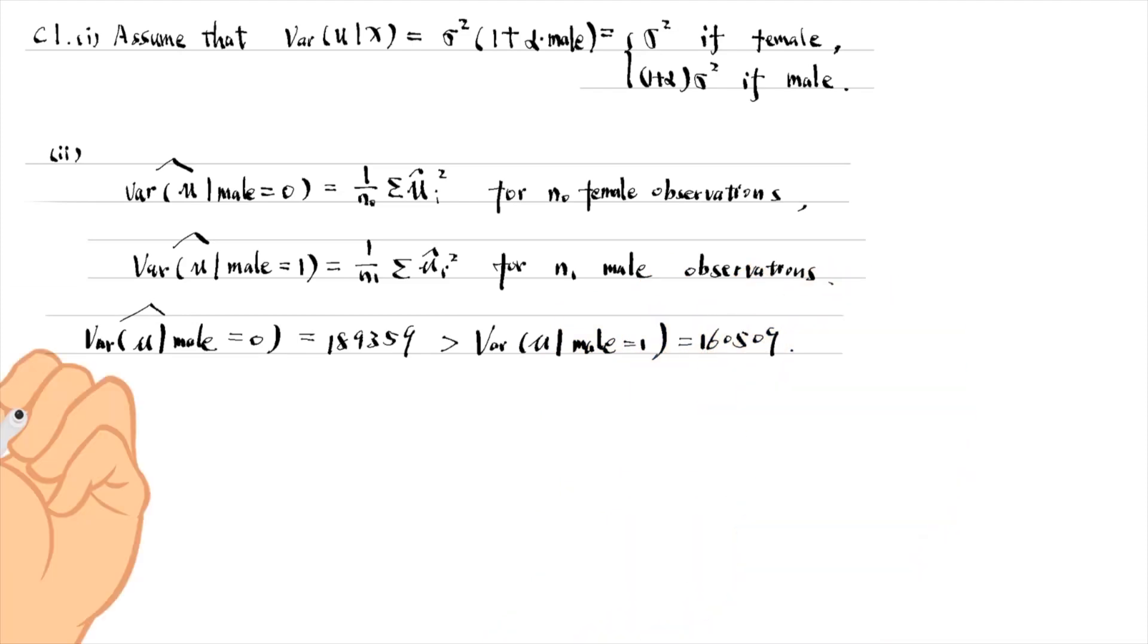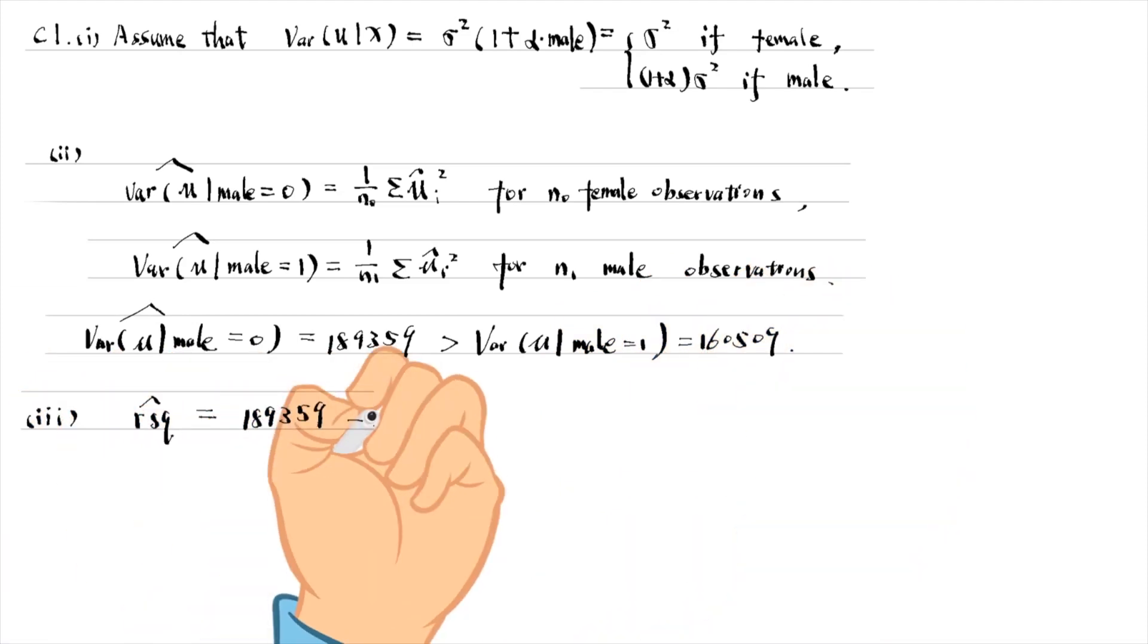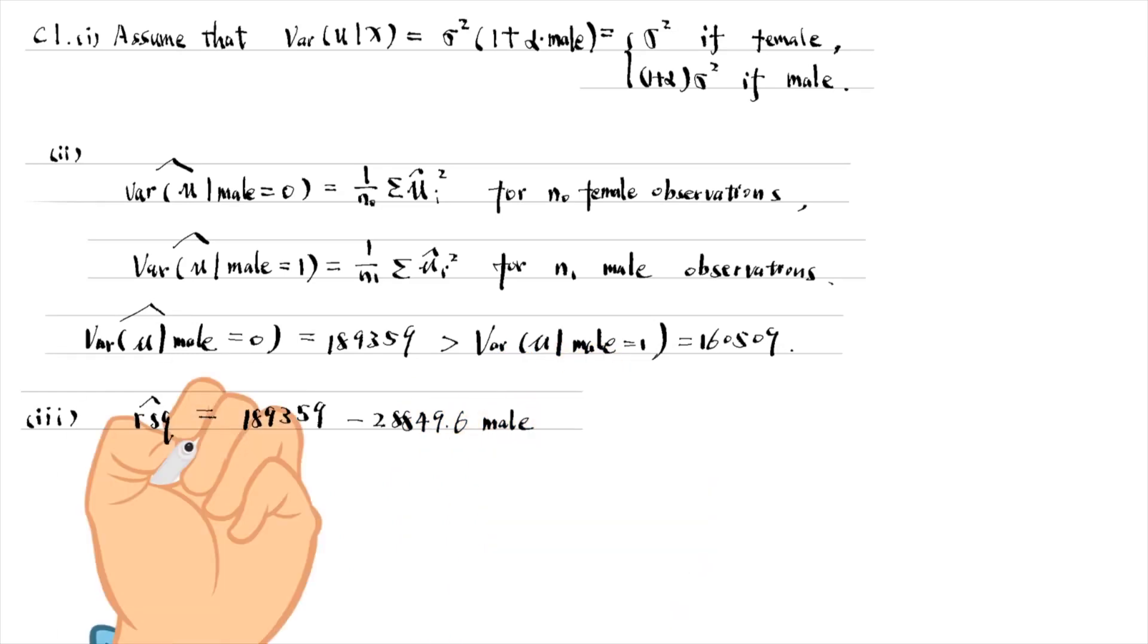We find that the estimate of the variance of error term for females is higher than that for males. In part 3, we can run a simple regression to find the significance of the difference. We regress the squared residuals on the dummy variable male.